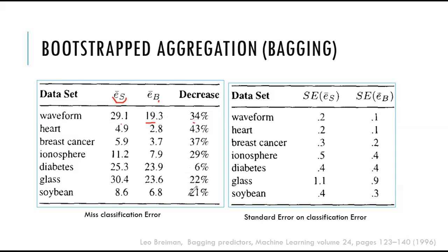Not only improvement in accuracy, but also the stability in terms of the standard error in the classification error is improved. You can see the monolithic decision tree, the standard error is 0.2. But for bagging ensemble, the standard error is 0.1.